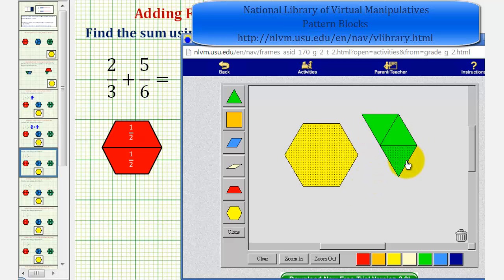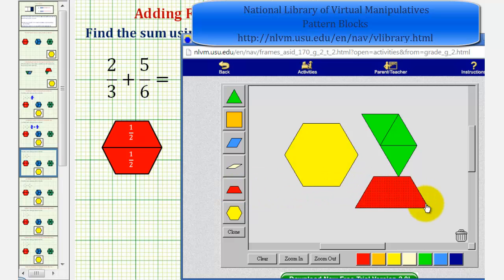And these three green pattern blocks could be exchanged for one red pattern block, which is equal to one-half.